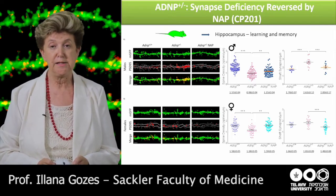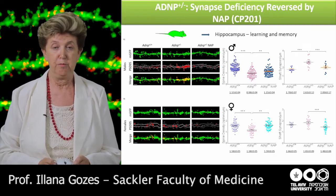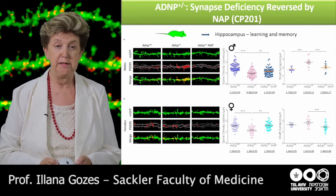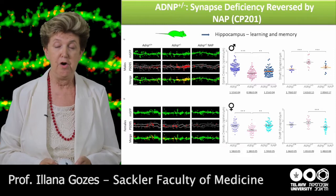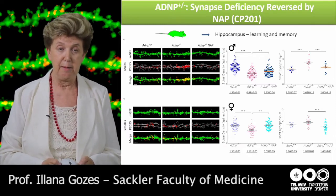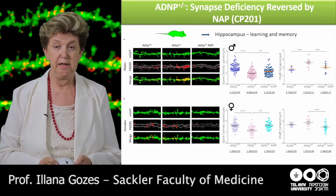and also by injection, we actually see an increase in dendritic spine formation — normalization of dendritic spine formation. Here you see the hippocampus. We also looked at immature shaft synapses labeled with PSD-95, postsynaptic density 95, and we saw an increase in immature pathogenic synapses in the haploinsufficient animals that was corrected by NAPVSIPQ treatment. The correction was observed both in males and in females.